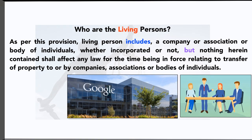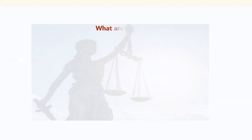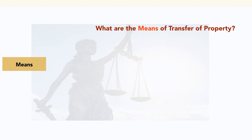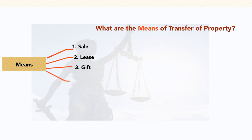The next topic is what are the modes of transfer of property — the ways through which a property can be transferred. These are: sale — you can sell it; lease — you can give it on rent; gift — you can also gift it; mortgage — which we will not discuss as it is not in this syllabus; and exchange. So we have basically four topics: sale, lease, gift, and exchange as the modes of transfer of property.